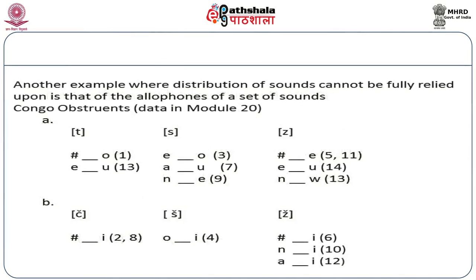Another example where the notion of distribution is problematic comes from allophones in languages. For example, we have looked at the Kongo alternations of /ta/, /tʃa/, /ʃa/, and /za/. When we look at the environments, we notice the following: allophone /tʃa/ occurs before /e/. We thus conclude that /tʃa/ is an allophone of /ta/ because /ta/ never occurs before /e/.